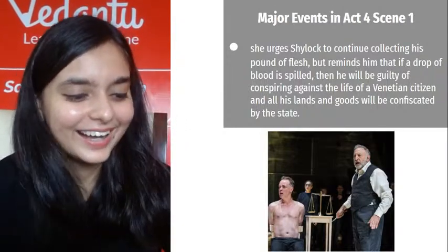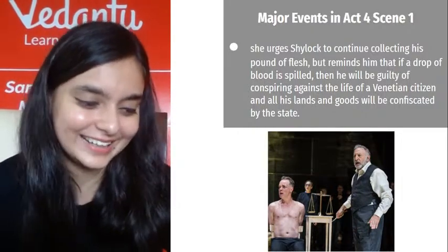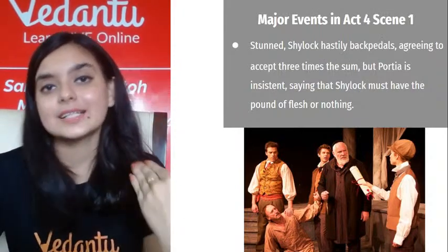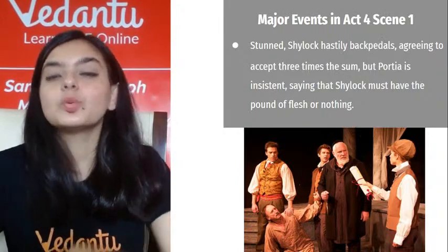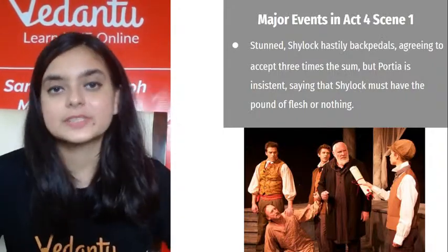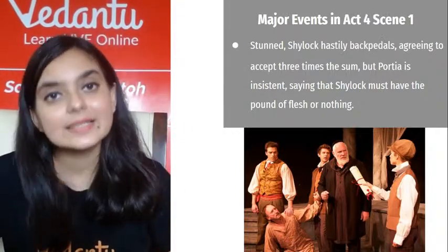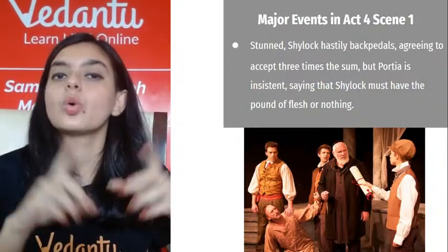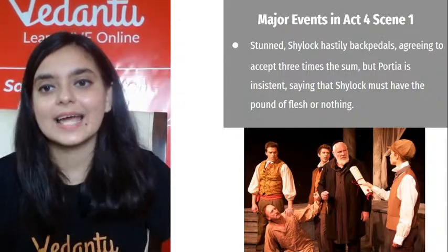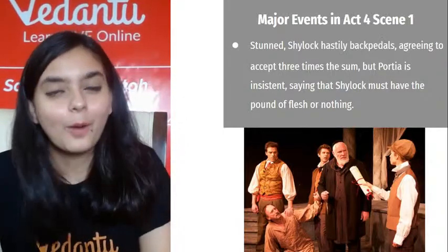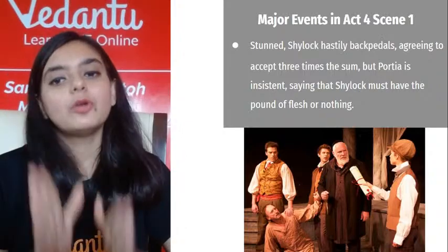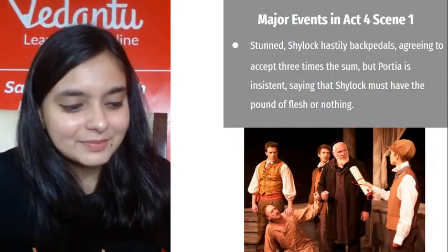Portia had already offered Shylock twice the amount — but Shylock had publicly refused, saying he would not accept anything. What he wanted was only revenge. Now after realizing he is trapped, Shylock says he will accept three times the amount, but Portia says: 'You have publicly refused — you cannot accept it anymore. You can only have the pound of flesh or nothing at all.'